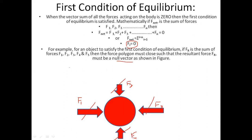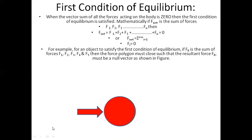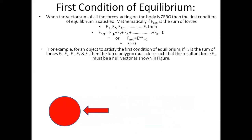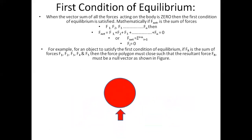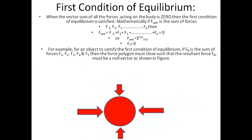If the object feels no net force in any direction, it is in equilibrium. For example, if only F1 was present, the object would be moving and in non-equilibrium. Similarly, if F3, F2, or F4 alone were present, the object would not be in equilibrium. For the first condition, all forces must be present and cancel each other out so the resultant is zero.